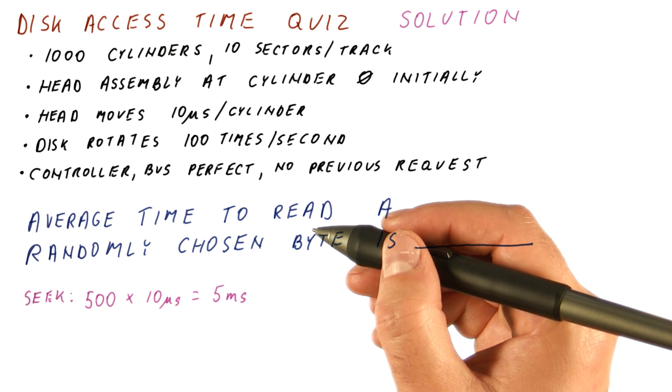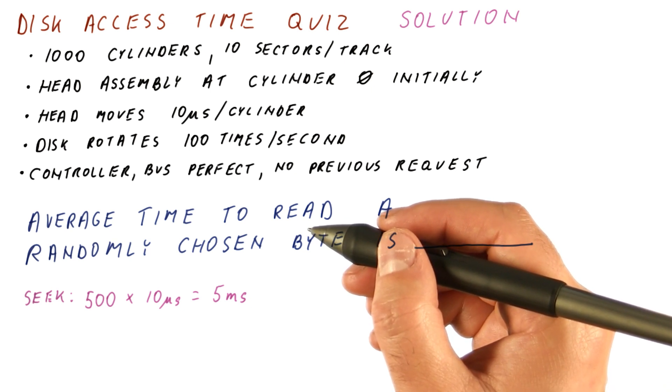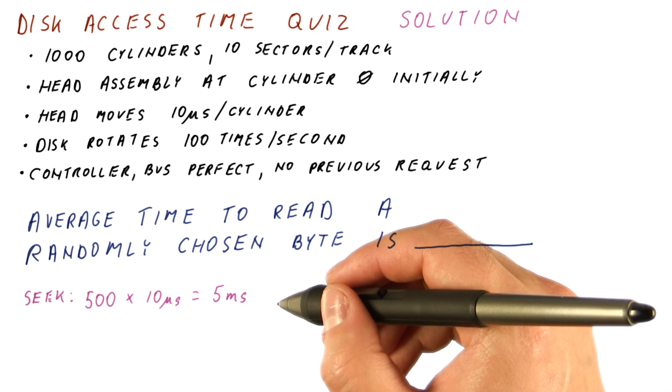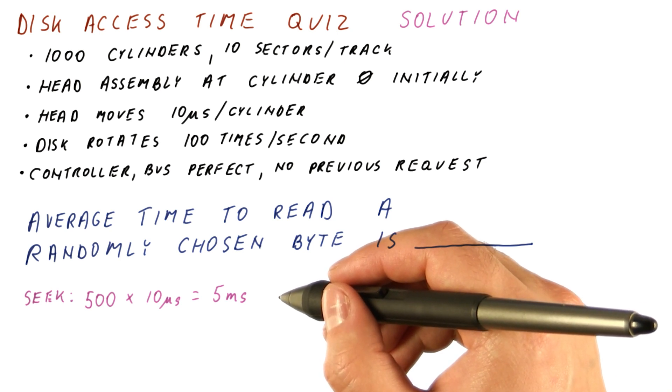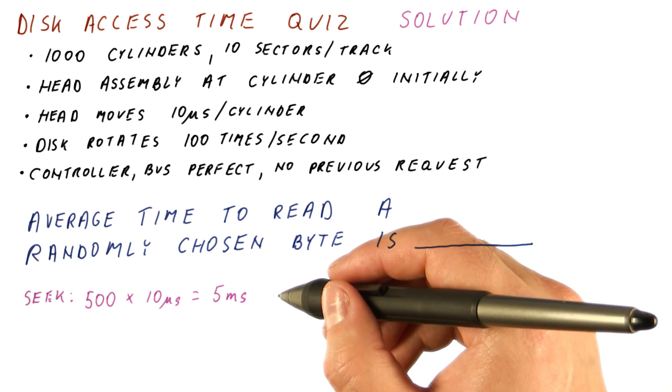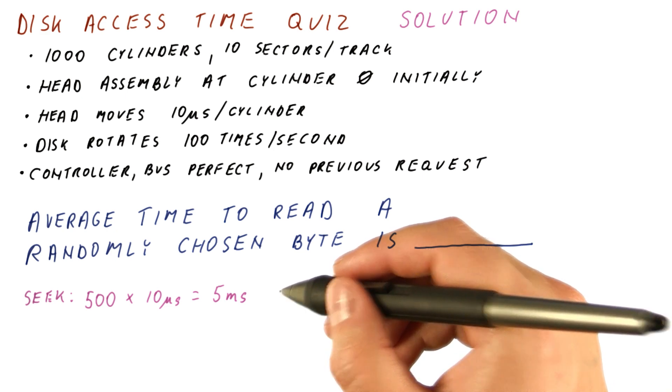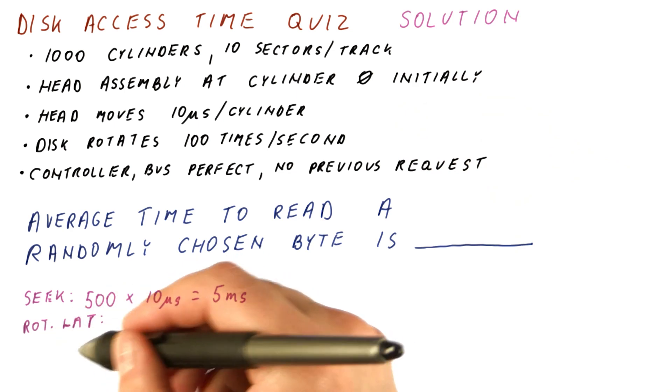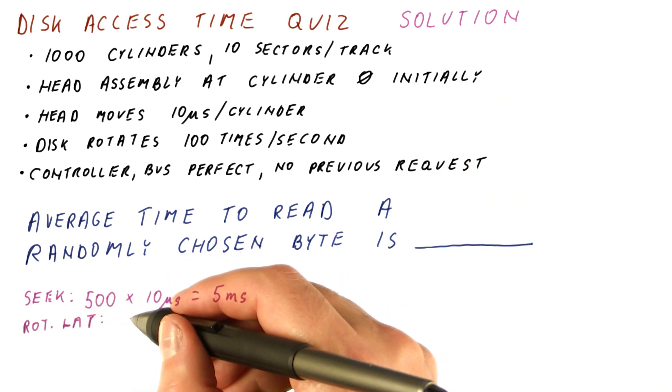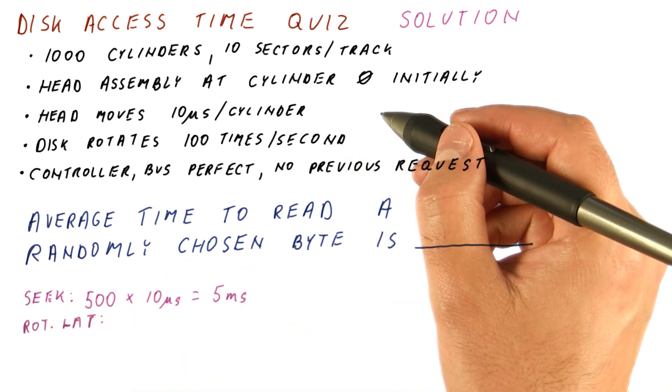At that point, our head is in a random place on the correct track. Now we need to wait for the beginning of the correct sector to get under the head. And just like when we were doing the seek, the rotational latency will be on average half of a rotation.